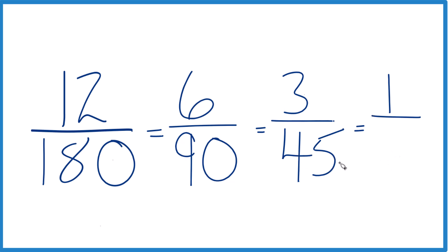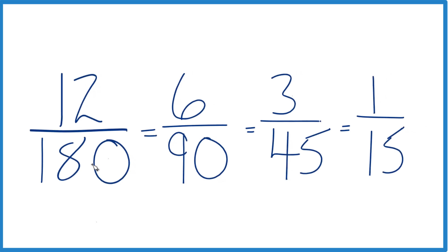And 45 divided by 3, that equals 15, because 15 times 3 is 45. We end up with 12 over 180 equaling 1 over 15.